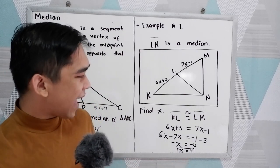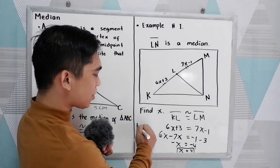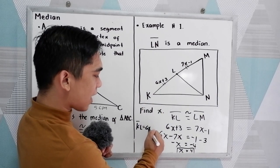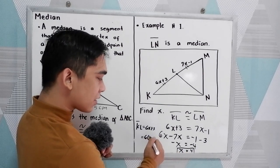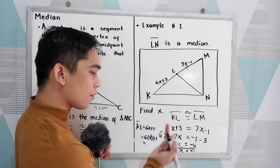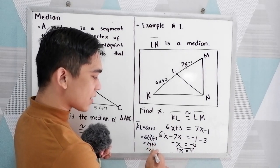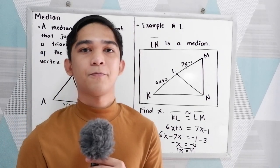Now if your teacher asks you, what is the measure of KL? So KL is 6x plus 3. All you need to do is to substitute. 6 times X is 4 plus 3. 6 times 4, that is 24 plus 3, that is 27. So the measure of KL is 27 units.